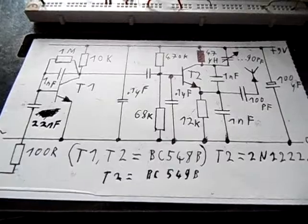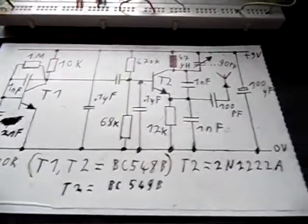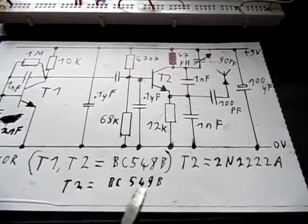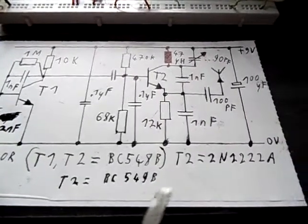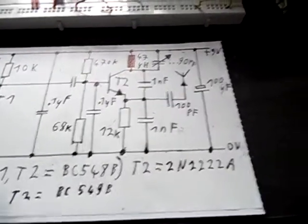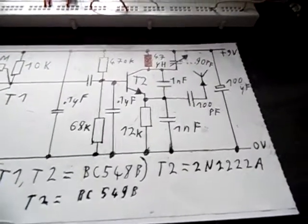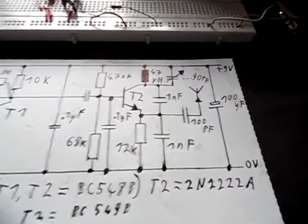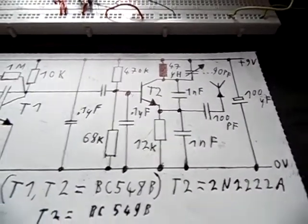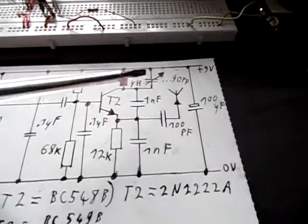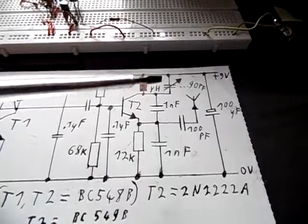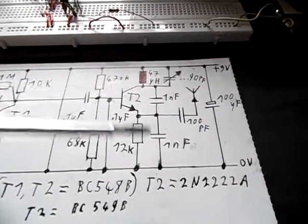As transistors you should use a BC548B. But for T2, transistor 2, you can also use a BC549 or a 2N2222A. The circuit transmits on about 1100 kHz. It varies a bit depending on which transistor you're using, and with this trimmer capacitor here you can adjust the frequency. But you can only adjust it in a small range since I made everything low impedance.